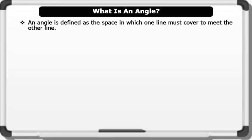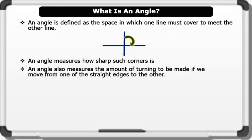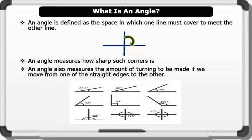Note that when two straight edges or lines meet, they form a corner. An angle measures how sharp such corners are. An angle also measures the amount of turning to be made if we move from one of the straight edges to the other. Other examples of angles are shown on the board.